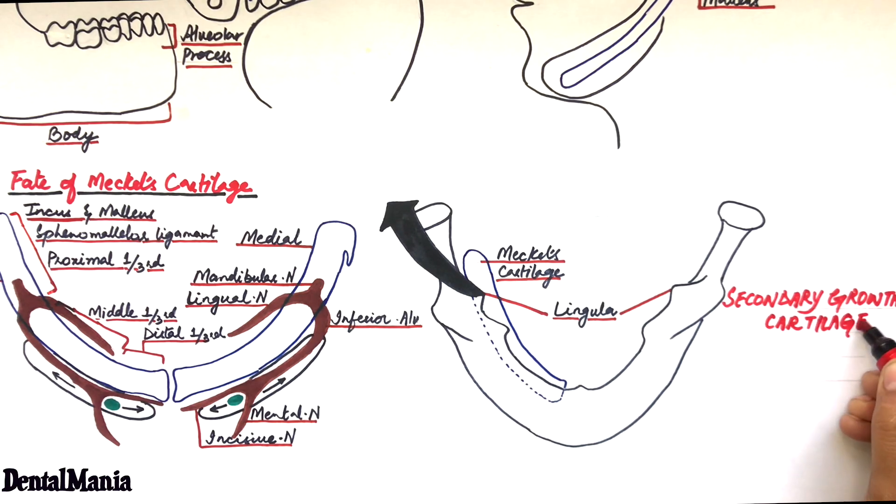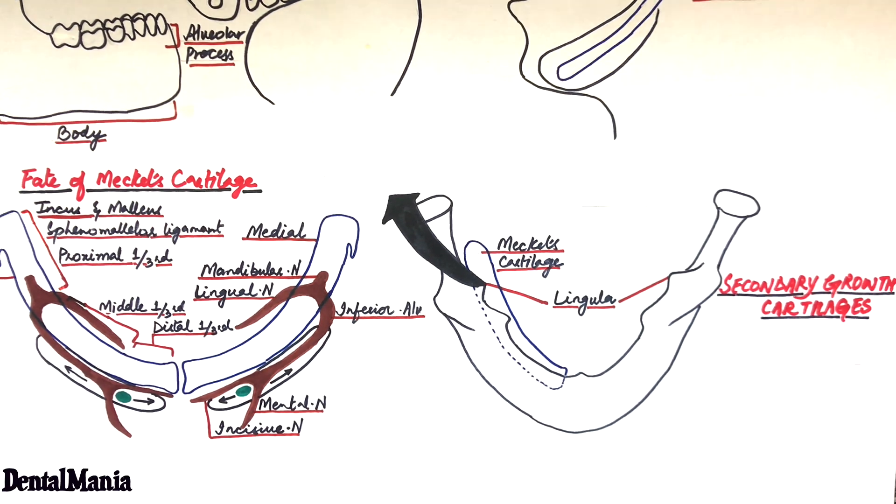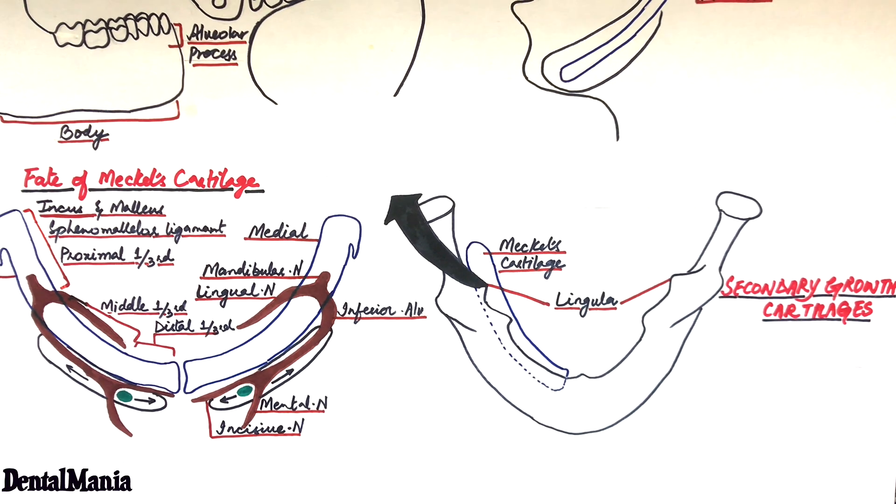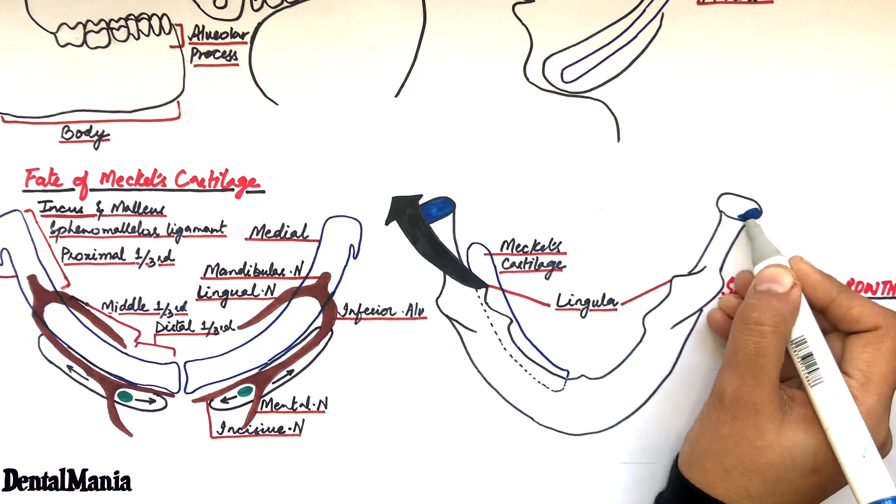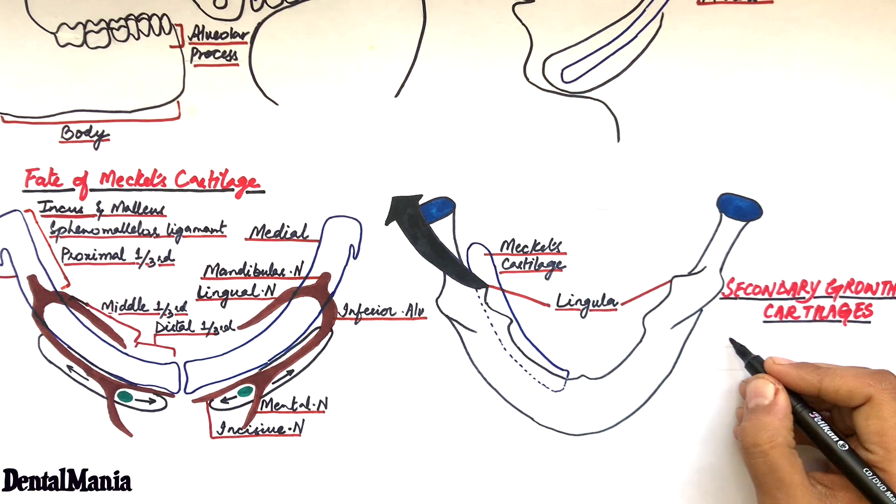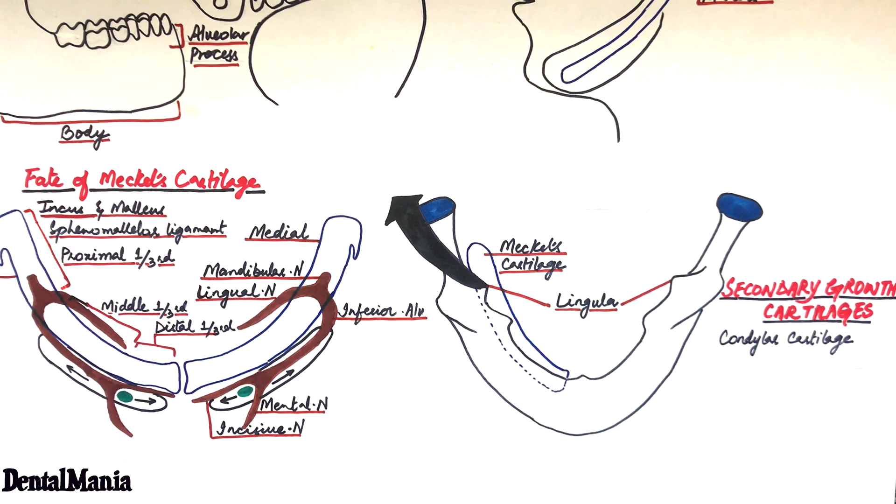The further growth of mandible until birth occurs by the appearance of three secondary growth cartilages. These secondary growth cartilages are the condylar cartilages which are considered the most important in the growth of mandible, the coronoid cartilages, and the symphysial cartilage.